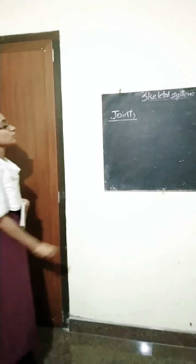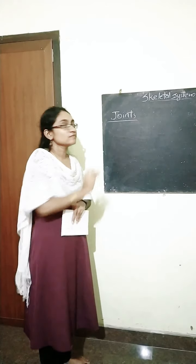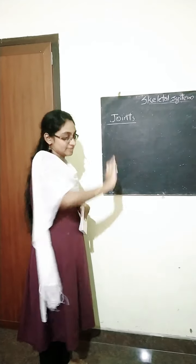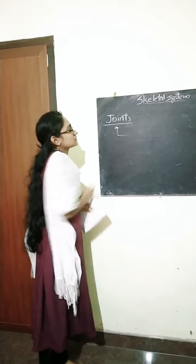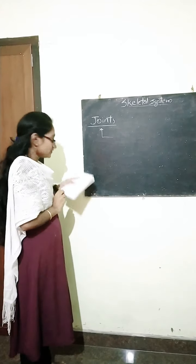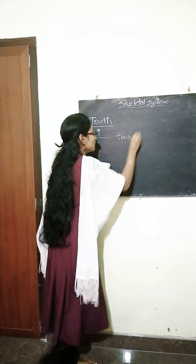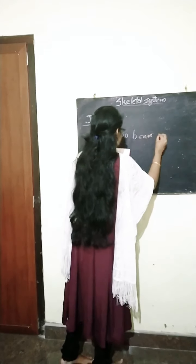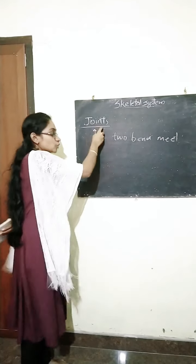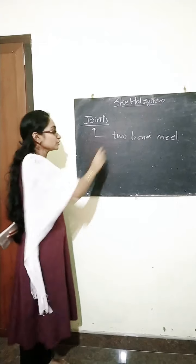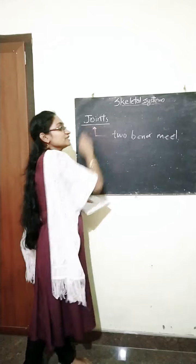In our body there are a number of joints, and there are different types of joints. We will discuss about that. How we can define the term 'joints'? We can define it as the place where two bones meet. The place where two bones meet are called joints. This is the definition of joints.